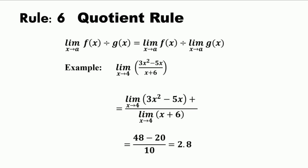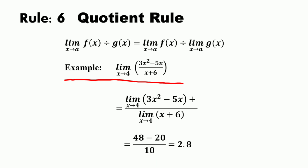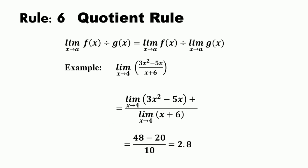The sixth rule is the quotient rule. The limit of f(x)/g(x) as x approaches a equals the limit of f(x) divided by the limit of g(x) as x approaches a, whenever the denominator is non-zero. For example, the limit of (3x²−5x)/(x+6) as x approaches 4 equals (48−20)/10, which is 2.8.